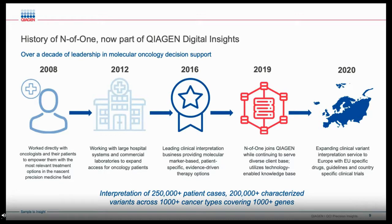By 2016, NF1 had partnered with over 30 clinical laboratories to provide clinical interpretation, establishing itself as a leading clinical interpretation business. In 2019, NF1 joined Kyagen, bringing together NF1's somatic clinical interpretation expertise with Kyagen's bioinformatic, computational, and curation expertise. NF1 has generated reports for over 250,000 patient cases, covering over 200,000 unique variants across 1,000 genes and over 1,000 subtypes of cancer. In 2020, QCI Precision Insights expanded to offer service to Europe with coverage of EU-specific drug approvals, guidelines, and clinical trials.